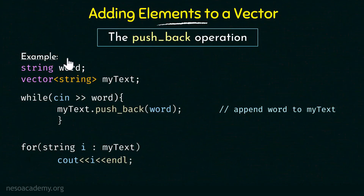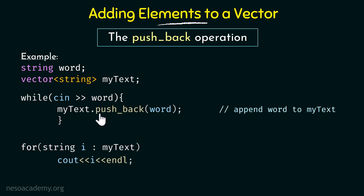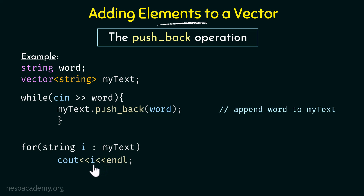Now let us take one more example using a string vector. Here I define a normal string variable called word — not a vector, just a normal string variable. Then I declare a vector of type string called mytext. Using a while loop, we read input from the user into word, and using push_back we push that word into the vector mytext, appending it. As long as there is input from the user, it keeps reading and pushing words onto mytext. Then a range-for statement over mytext prints all stored values.